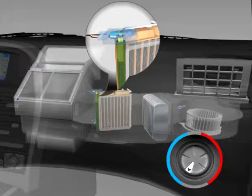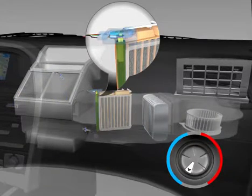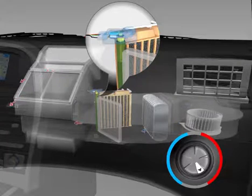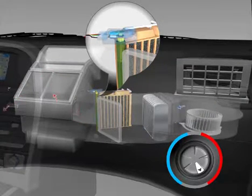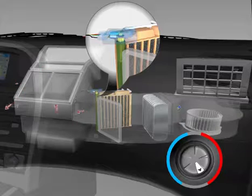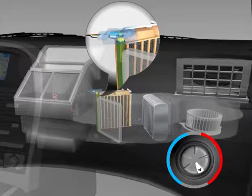In order for the heater to function, hot coolant passes through the heater core. Cool air is blown through the heater core and heat is transferred from the heater core to the air. The heated air is then circulated through the desired vents and into the passenger compartment.